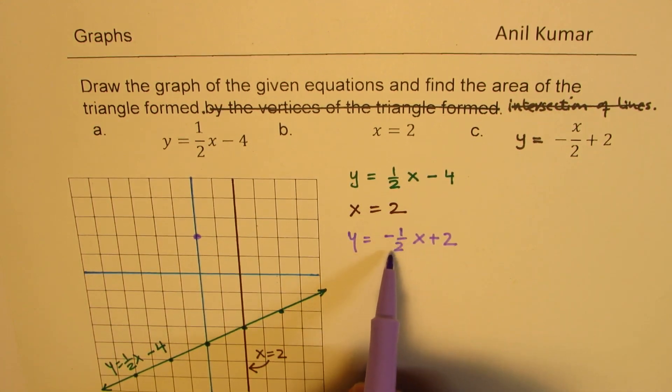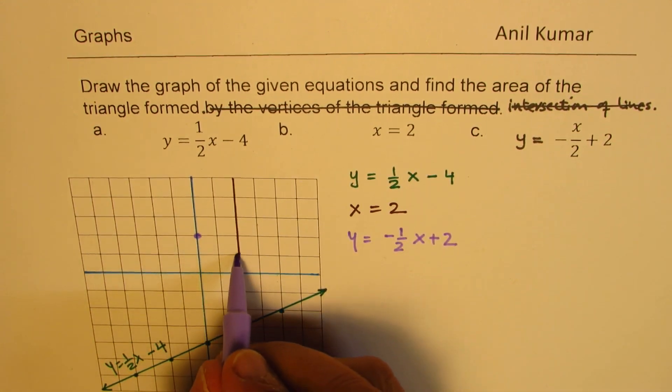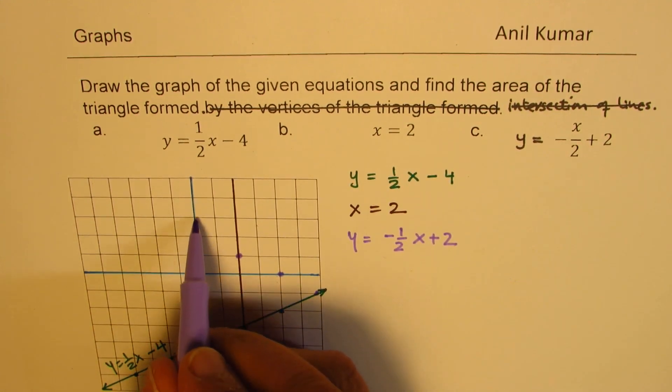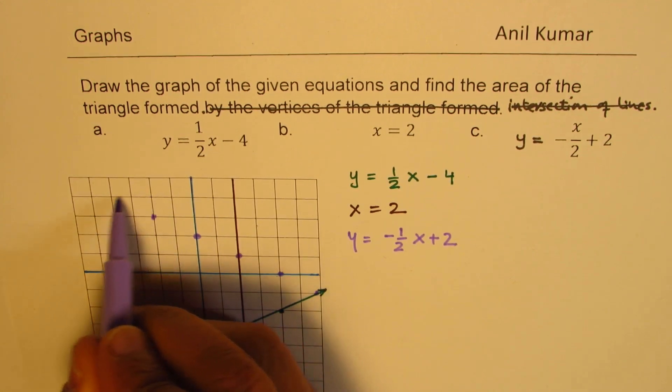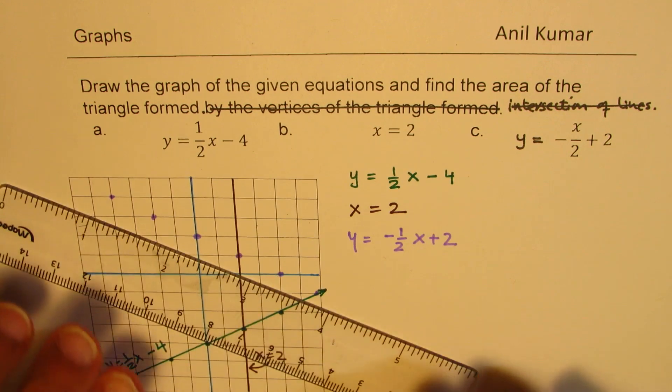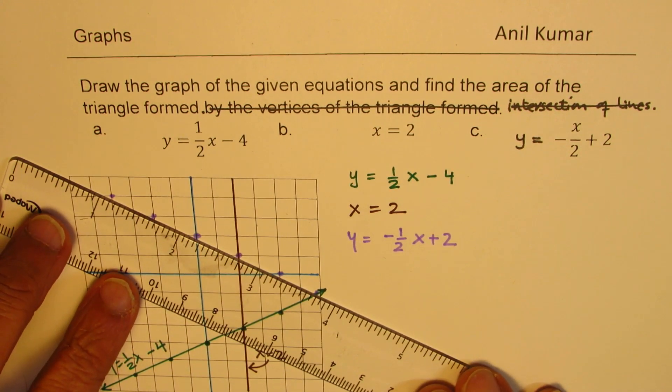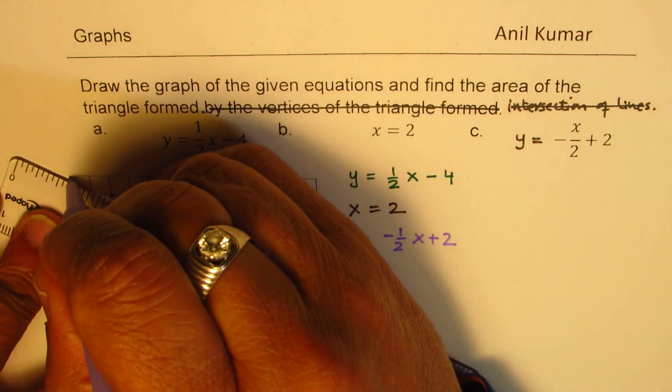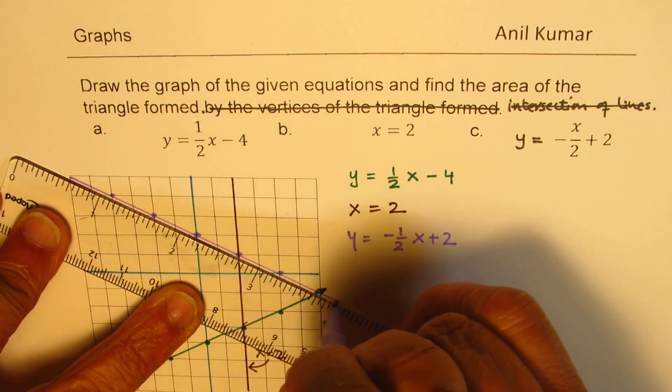So we'll go down by 1 and 2 right. So 1 down, 2 right, 1 down, 2 right, 1 down, 2 right. That is how we'll move. We could also go up and left, and then we get some more points. So to draw accurately, we need actually 5 points. We'll connect these points now and look for their intersections.